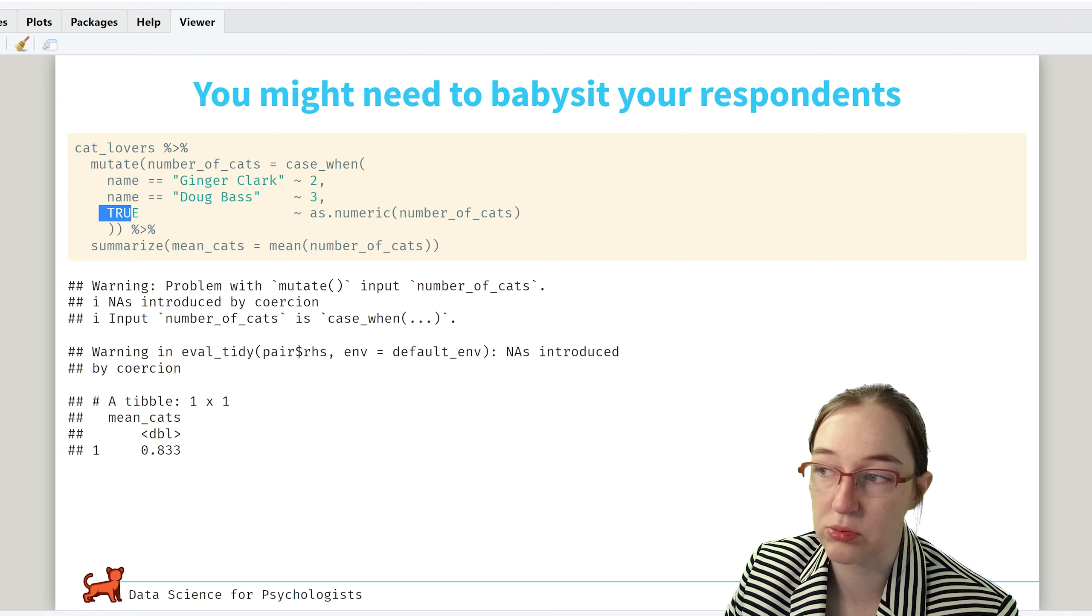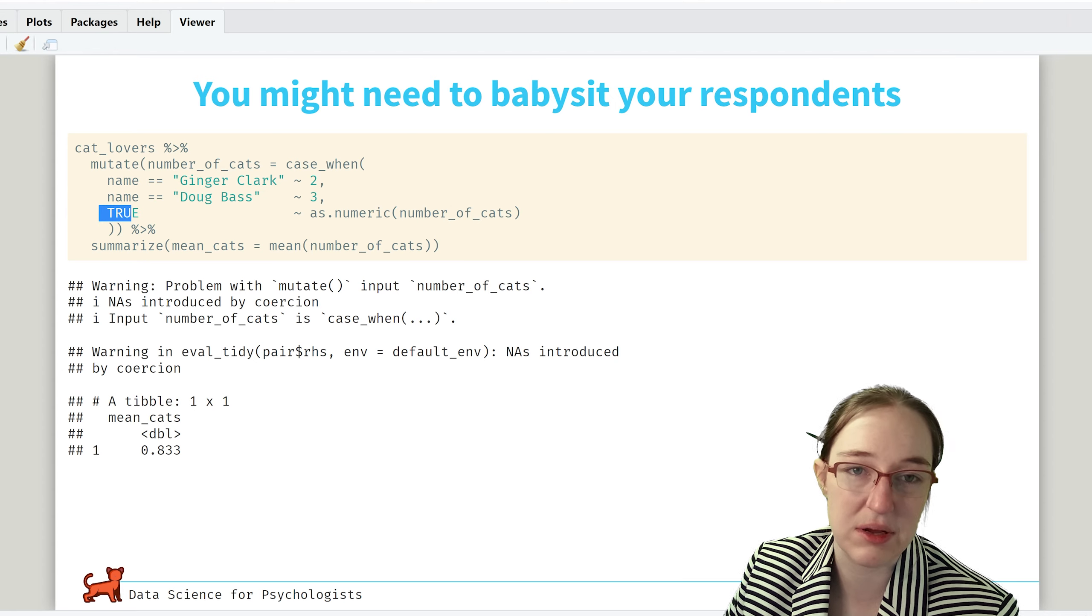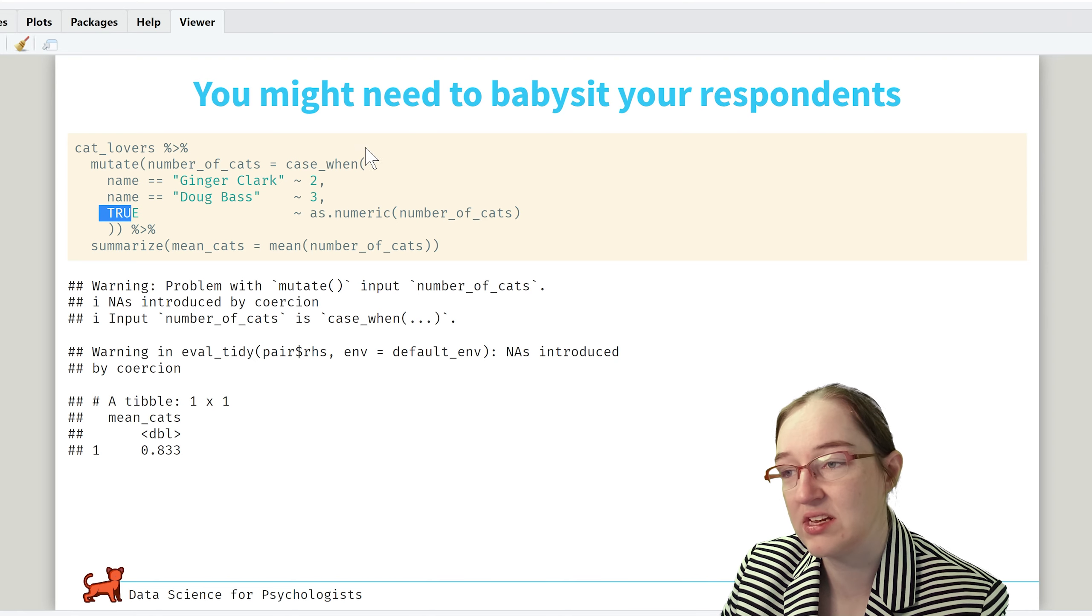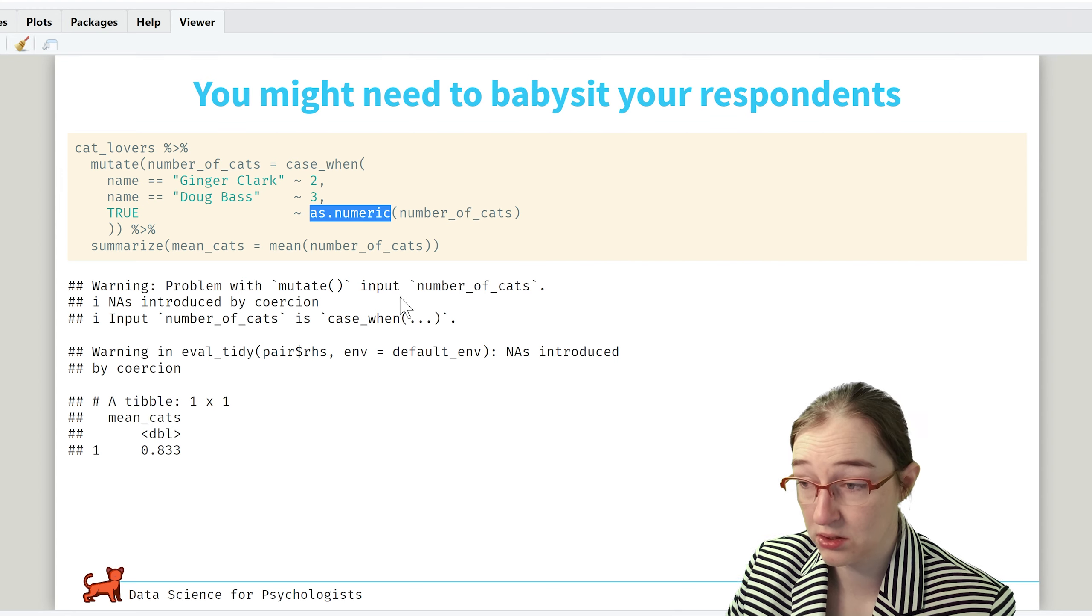And while we're at it, we're gonna convert everything. So true, case_when true is like what you do to everything after. So they process them in order. But then case_when is true, we're gonna convert everything to as.numeric.